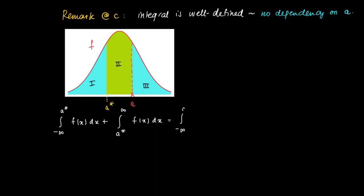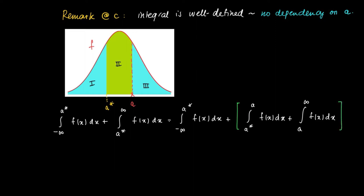Now, look at this integral. We're going to split up the integral from a star to infinity, since the integral from a star to infinity is basically areas 2 and 3 together. And area 2 is just the definite integral from a star to a, f(x) dx. And area 3 is given by the integral from a to infinity, f(x) dx. We just assume that all these integrals exist. So basically, we just regrouped our areas 1, 2, and 3 — where a star to infinity is area 2 plus 3, and minus infinity to a star is area 1.